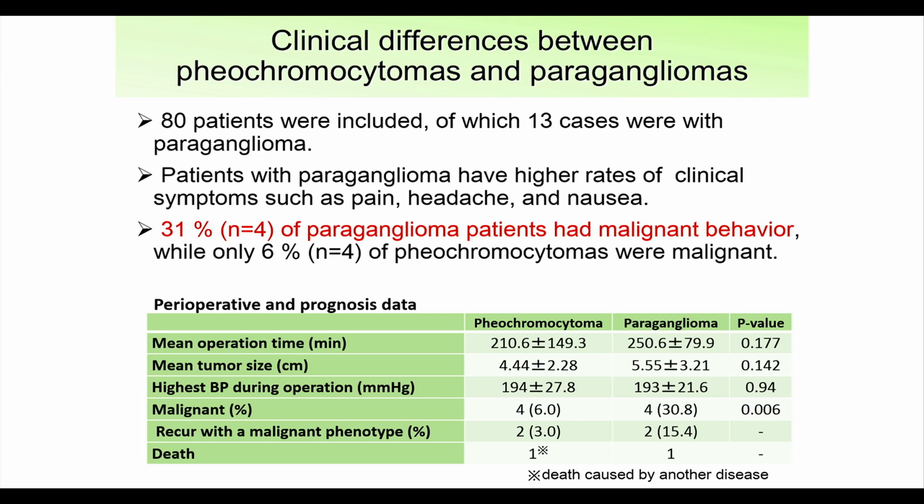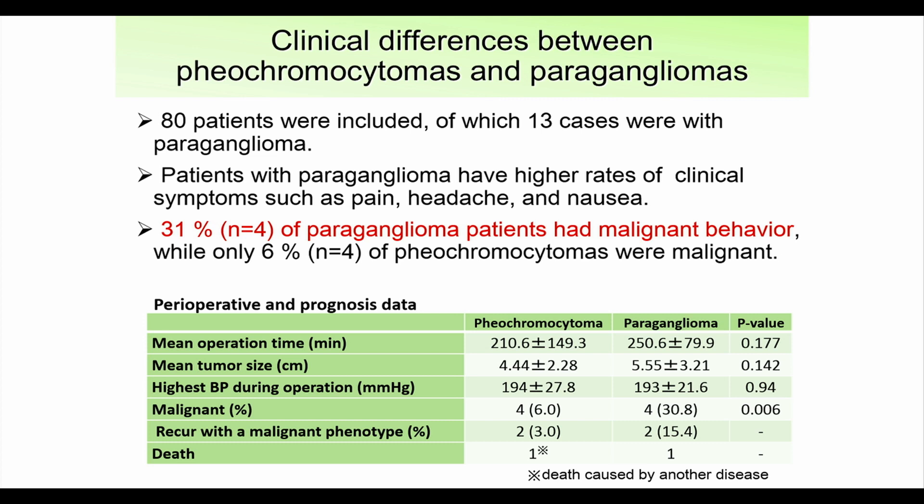Eighty patients were included, of which 13 cases were paragangliomas, meaning 67 cases were pheochromocytoma. Patients with paragangliomas had higher rates of clinical symptoms such as pain, headache, and nausea. Thirty-one percent — four cases of paragangliomas — had malignant behavior, while only 6% of pheochromocytomas were malignant.